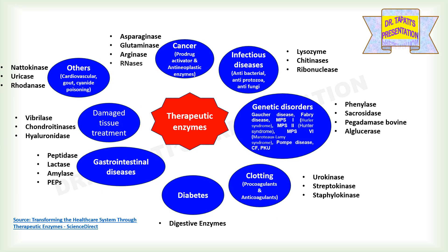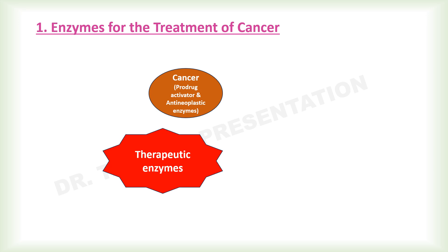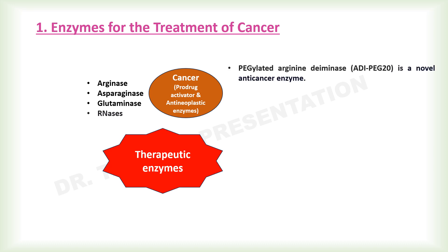Let us look at the names of a few therapeutic enzymes and their uses in the treatment of various diseases. Enzymes used for the treatment of cancer generally act as pro-drug activators and anti-neoplastic enzymes. A prodrug is a pharmacologically inactive substance that is converted in the body into an active drug, whereas anti-neoplastic means inhibiting the growth and spread of neoplasms or malignant cells. The most useful enzymes for the treatment of cancer are arginase, asparaginase, glutaminase, and arinases.